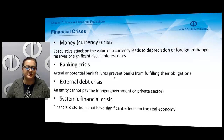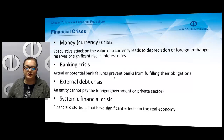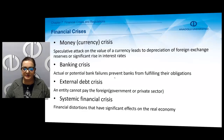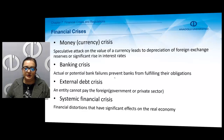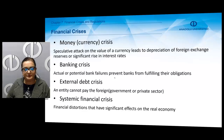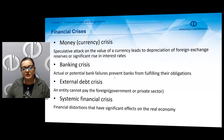We can classify financial crises as: money crisis, banking crisis, external debt crisis, or systemic financial crisis. A money or currency crisis occurs when there is a speculative attack on the value of a currency and it leads to depreciation of foreign exchange reserves or significant rises in interest rates. A banking crisis happens when actual or potential bank failure prevents banks from fulfilling their obligations. An external debt crisis happens when an entity cannot pay its foreign debt. Systemic financial crises are financial distortions that have significant effects on the real economy.